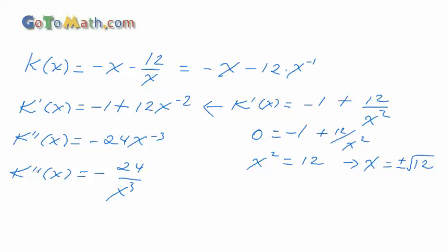Now all we have to do is take k double prime, plug in the negative square root of 12. We'll start with that one. So we have negative 24 over negative square root of 12, and that's all raised to the third power. And because that's raised to the third power, when you have a negative times a negative times a negative, you get a negative. So we're going to get negative off the bottom, but we have a minus here. So this is going to end up being a positive number. And that's all we really care about.